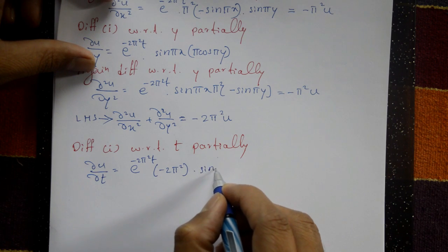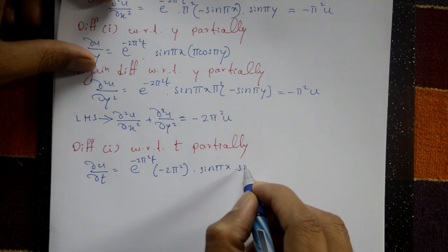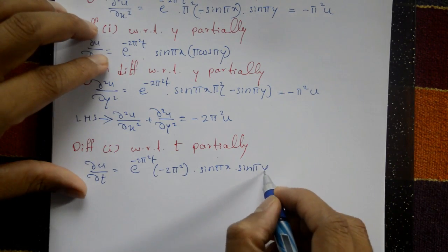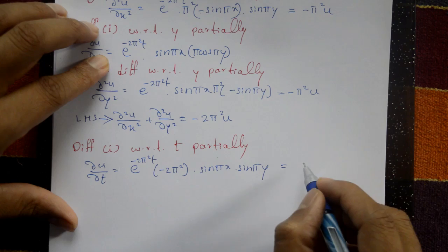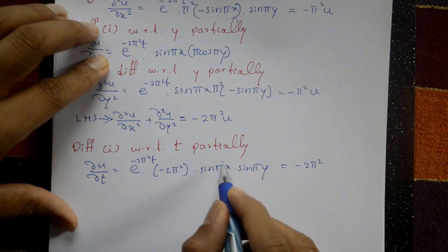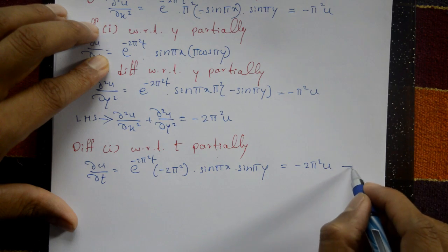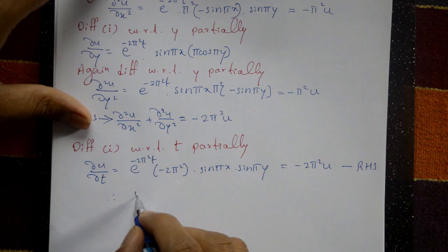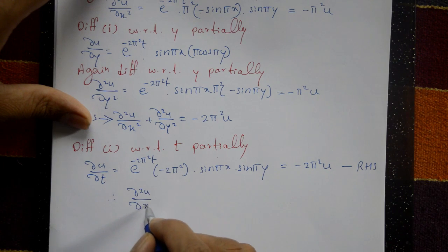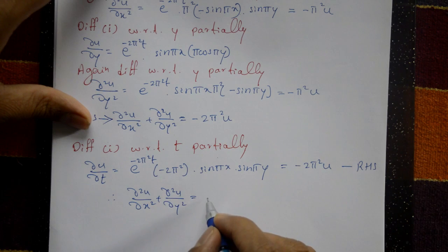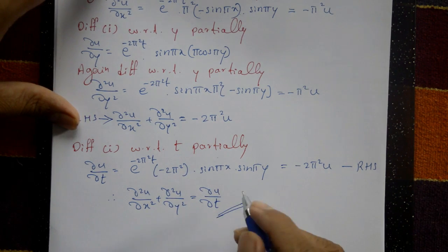∂u/∂t = minus 2π² · e^(-2π²t) · sin(πx) · sin(πy) = minus 2π²u. This is the right-hand side. Therefore ∂²u/∂x² + ∂²u/∂y² = ∂u/∂t. This is the required solution.